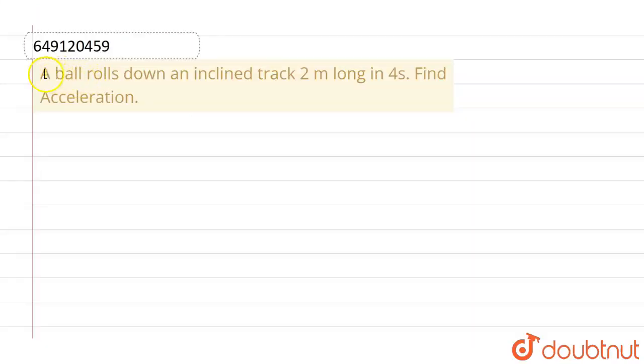This given question is: a ball rolls down an inclined track 2 meters long in 4 seconds. We have to find out the acceleration.